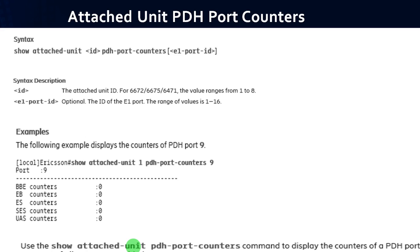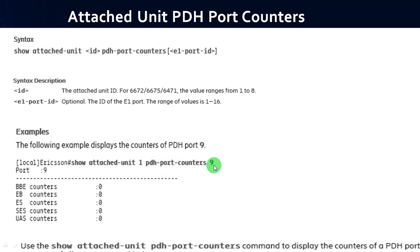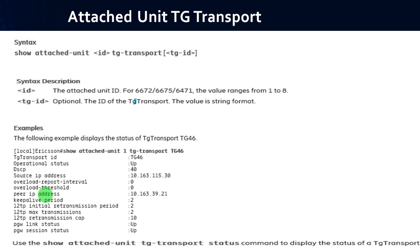To get the attached unit PDH port counters, follow the syntax: show attached-unit <id> pdh-port-counters <e1 port id>. The example provides counter details for PDH port number 9. The fields include: BBE (Background Block Error), EB (Errored Block), ES (Errored Seconds), SES (Severely Errored Seconds), and UAS (Unavailable Seconds).